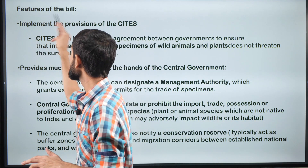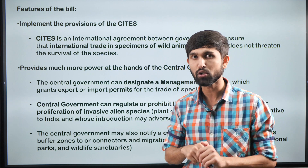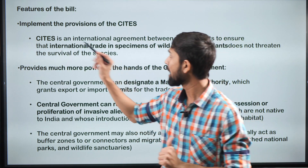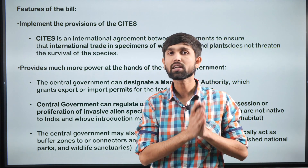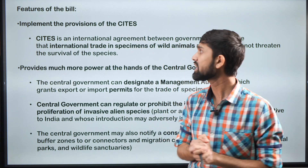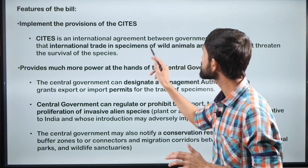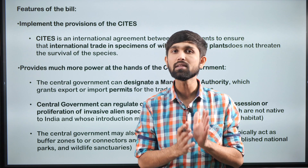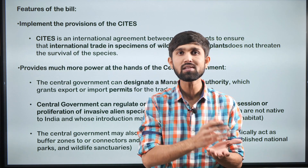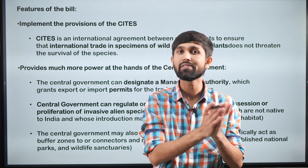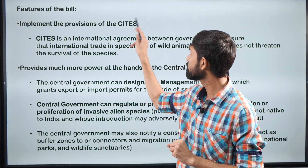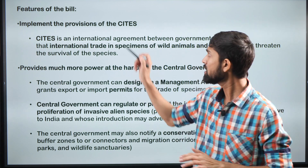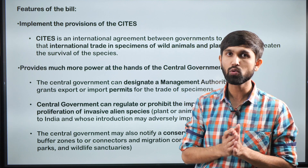Let's understand the important features of the Wildlife Protection Amendment Bill of 2022. One of them is implementing the provisions of CITES — the Convention on International Trade in Endangered Species — an international agreement between governments to ensure that international trade in specimens of wild animals and plants does not threaten their survival. India is a party to this agreement, and certain provisions have been added into this amendment bill to implement this convention.